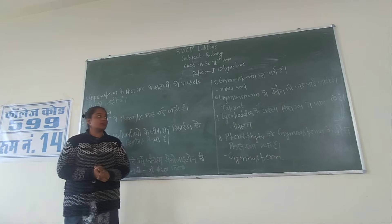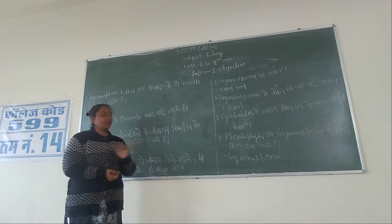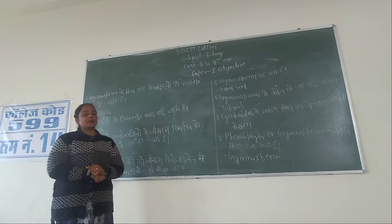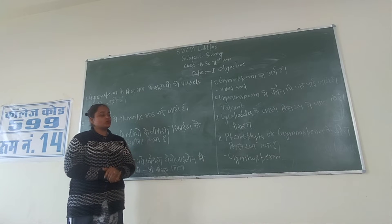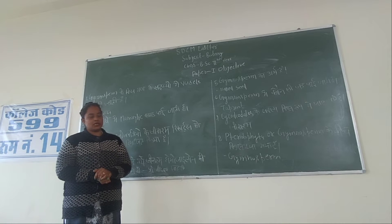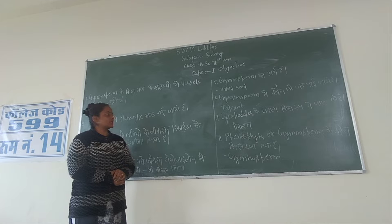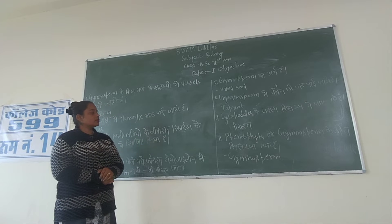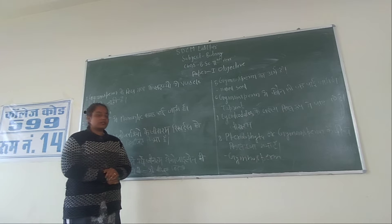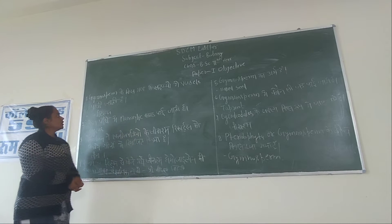BSE second year, there are three papers. The first paper is called Objective. Objective means that you have a question, then you have to choose an objective, then you have to solve the objective.